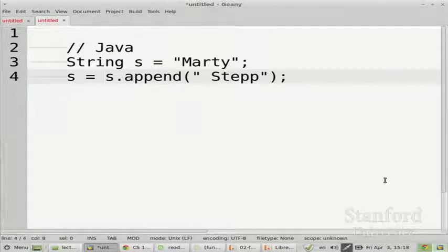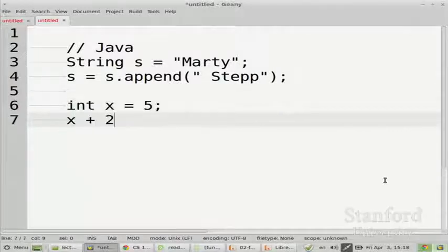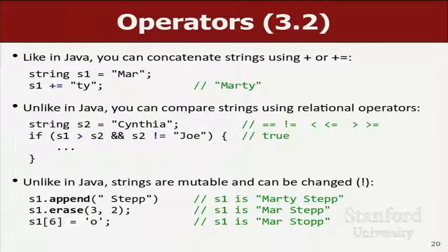That's a little weird when you're first learning to program, but it actually is fairly consistent with the primitive data types. Like if you have an int x equals 5 and then you say x plus 2, that doesn't change x to be 7, right? If you want x to be 7, you have to say x equals x plus 2. In C++, you really can just say append or erase, and it modifies the variable in place. You don't have to say s equals. So that's interesting.